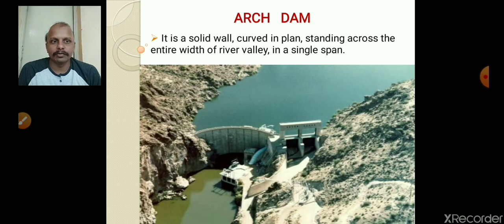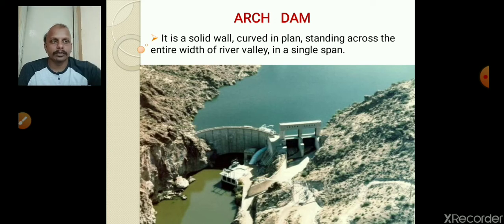An Arch Dam is a solid wall constructed across the river flow and the dam body is curved in plan. The convex portion of the dam is provided on the upstream side whereas the concave portion is provided on the downstream side. This convex portion is on the upstream side so that the arch action can be utilized fully to transfer the water thrust coming on the dam body.